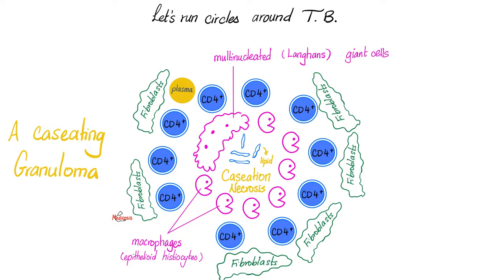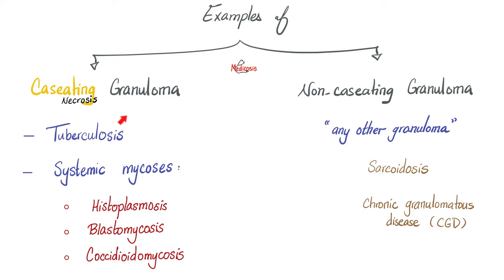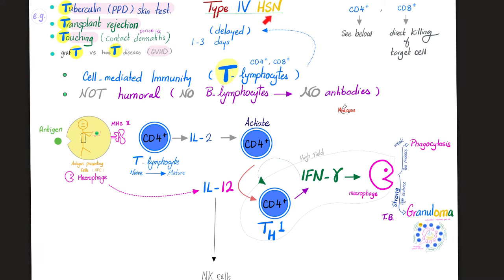Is tuberculosis the only cause of caseating granuloma? No, it's the most common cause. Others include the systemic mycoses. Anything else is a non-caseating granuloma. Quick review of type 4 hypersensitivity: the tuberculin skin test is type 4, i.e. T-lymphocytes. How do I activate the T-lymphocytes? Interleukin 12. How do I activate the macrophages? Interferon gamma.